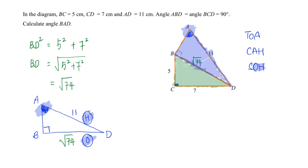So therefore, sine of the angle BAD that we are trying to find is equal to opposite, which is square root 74, divided by my hypotenuse 11. And in order to get the angle BAD, I will have to tap on sine inverse.